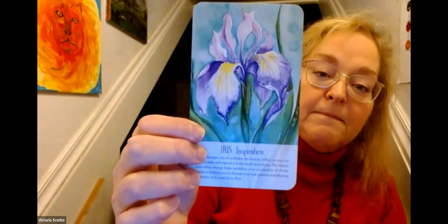And I got Iris, which is inspiration. This is the energy for the whole year for Leo. Iris encourages you to cultivate the beauty within so you can better create and express in the world around you. Her deeply restorative energy helps to revitalize your connection to divine guidance, helping you to discover your true passion and allowing inspiration and creativity to flow. And also, 2024 is an eight vibration. And in the tarot, the eight is the strength card, which is the card associated with Leo.